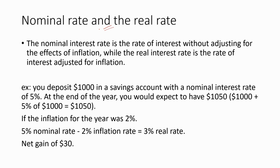Now let's discuss about the nominal rate and the real rate. The nominal interest rate is the rate of interest without adjusting for the effects of inflation, while the real interest rate is the rate of interest adjusted for inflation. For example, you deposit $1000 in a savings account with a nominal interest rate of 5%. At the end of the year, you would expect to have $1050, which includes the initial deposit amount and the interest earned. So if the inflation for the year was 2%, this 5% is only the nominal rate — typically published by banks and not including inflation adjustments. You have to adjust the nominal rate with the inflation rate to get the real rate.